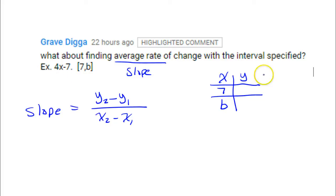But y equals 4x minus 7. I'm assuming that's what we're meaning here. So in this case, that's 4 times 7 minus 7. So that's 28 minus 7. So that's 21.